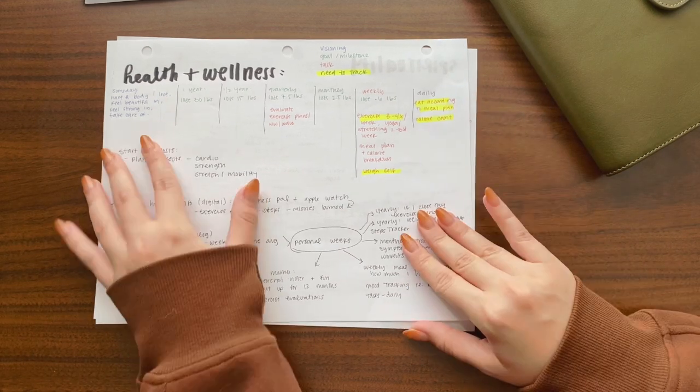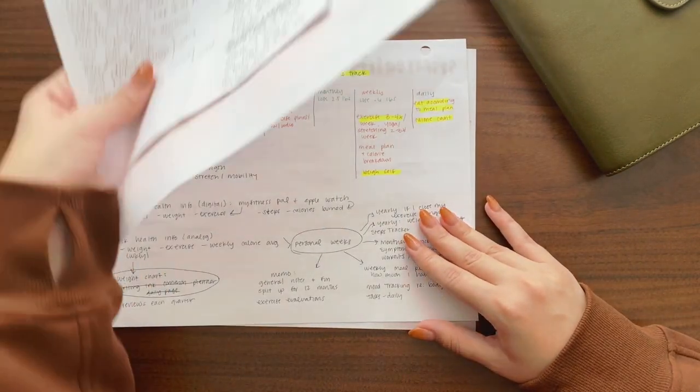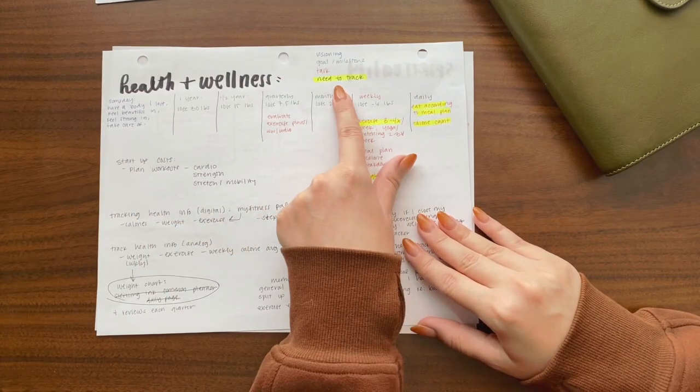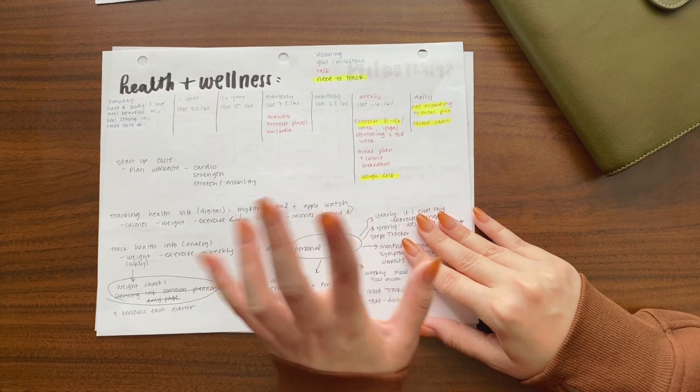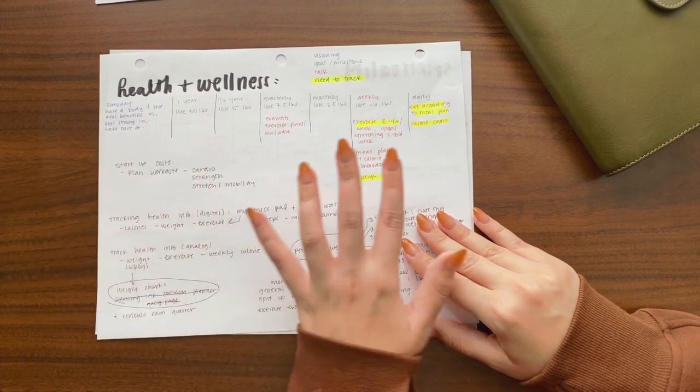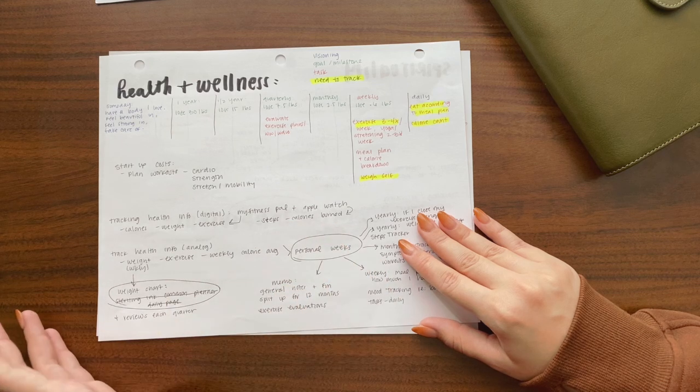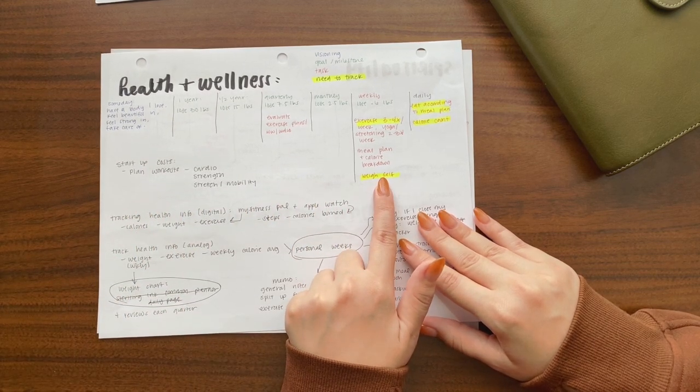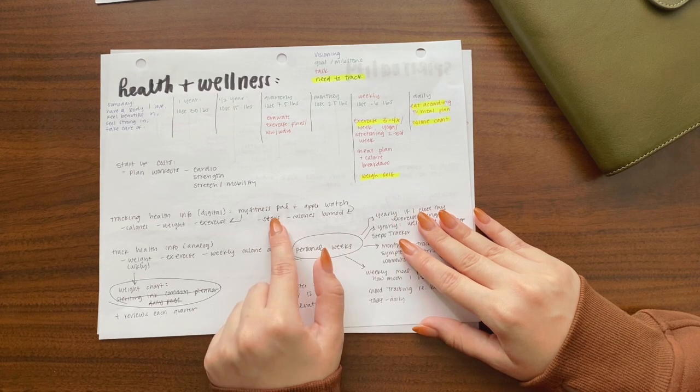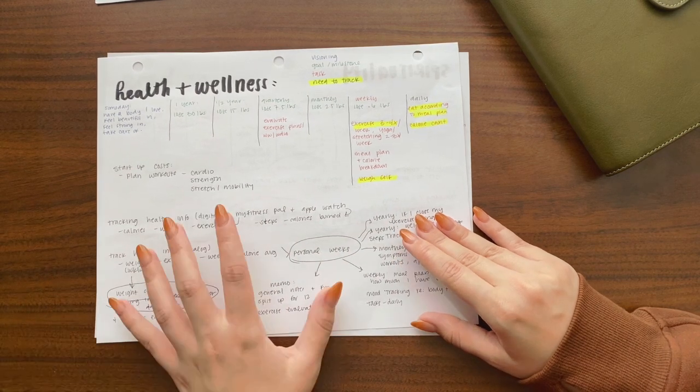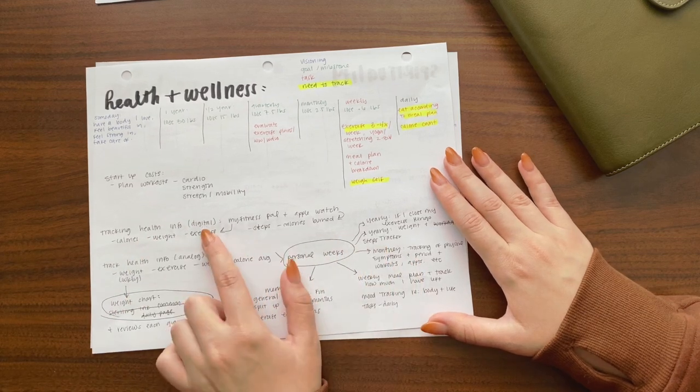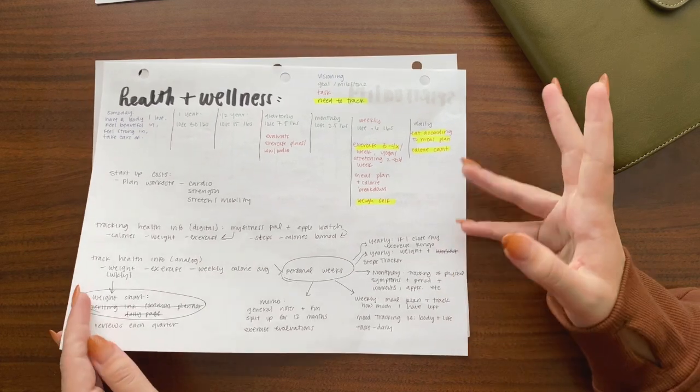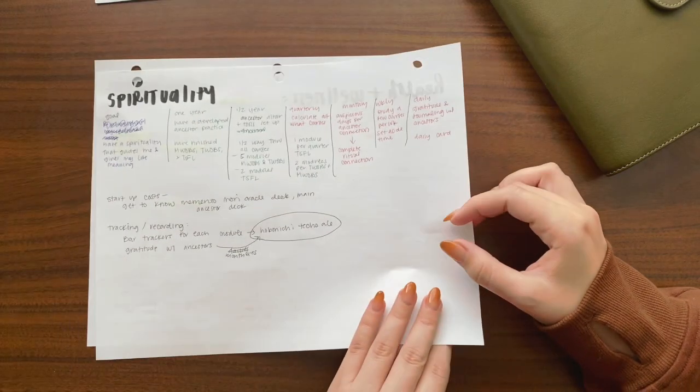And I fleshed out what that goal looks like now after I've done all this research. I mapped out what that goal looks like now. I highlighted things that I know I need to track. So if there's something in here that I need to track in some capacity, I make sure it's highlighted. And then I made sure I had areas for where to track it. So for example, for losing weight in the new year, I know I need to be tracking my weight and I will be doing that in My Fitness Pal.